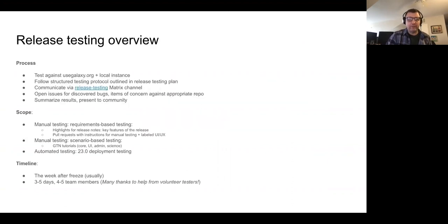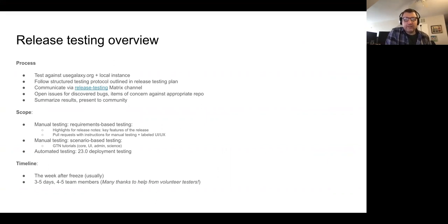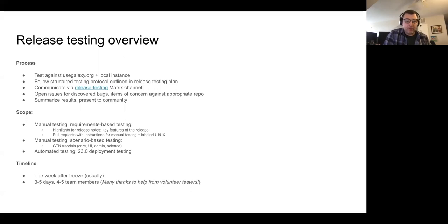First, a brief overview of how we do release testing. It changes every release cycle, but roughly we have the same process. We test against usegalaxy.org and use local instances whenever necessary. We have a formal detailed release testing plan which outlines a protocol specifying what we test, how we test, how we determine whether an issue is a concern, how we open issues, and how we verify something stems from the current release and not something which has been around for ages.